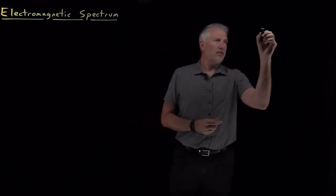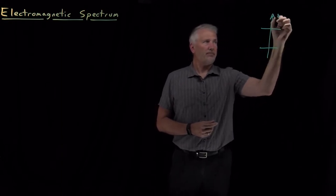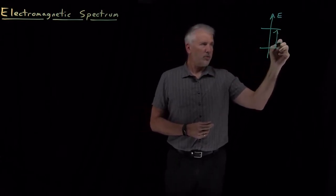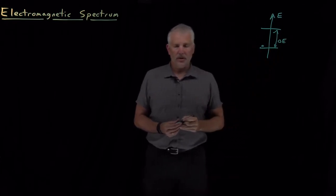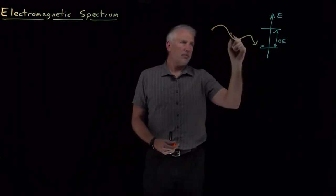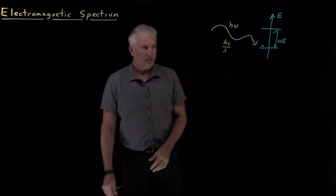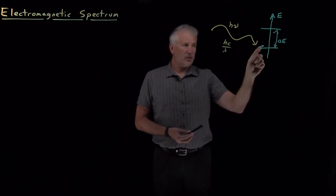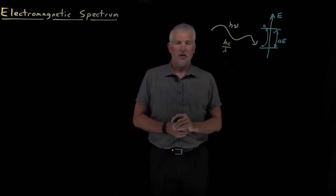What we mean by that is: we have a couple of quantum mechanical energy levels on a ladder, so the system can have this energy or this energy — some difference in energy between those states. Then if I have a system that's in the lower state and I bring in a photon — some light with some frequency or wavelength — the energy of that photon, if it matches the energy difference between these two states, can induce the transition and lift the system up to the other state.